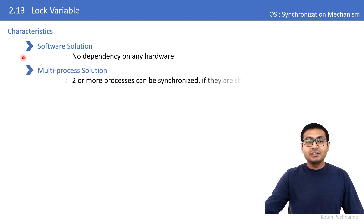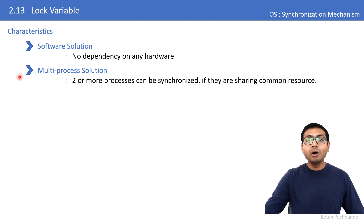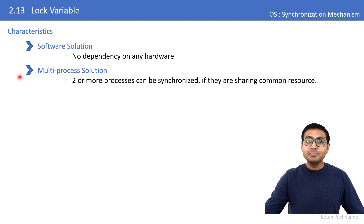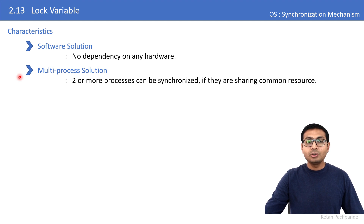The second characteristic is this mechanism is a multiprocess solution, meaning if 2 or more — 3, 4, 5, n number of processes — want to access a shared resource and you want to synchronize those n processes, you can use this mechanism. This point is mentioned because there are some other solutions such as strict alternation, which is only useful to synchronize 2 processes and cannot be used to synchronize more than 2.